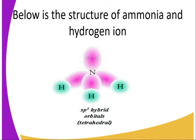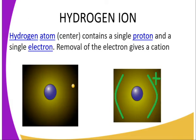Nitrogen has a lone pair of electrons up there, which are the lone pairs that will be donated to the hydrogen ion. Hydrogen ion contains a single proton and a single electron. By the removal of the single electron, this gives a cation — that is, a positively charged ion.